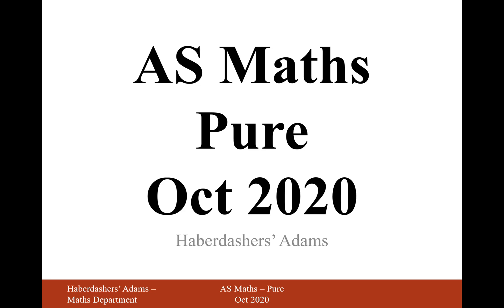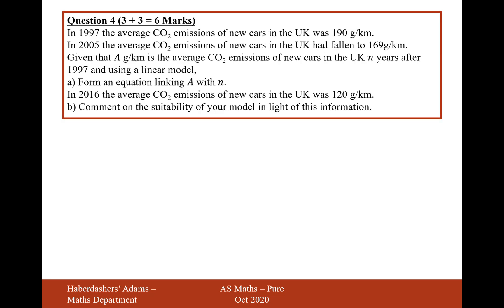Hello there, welcome to the October 2020 paper. Here we're looking at question 4. In 1997, the average CO2 emissions of new cars in the UK was 190 grams per kilometre. In 2005, the average CO2 emissions had fallen to 169 grams per kilometre. Given that a, in grams per kilometre, is the average CO2 emissions of new cars n years after 1997, use a linear model to form an equation linking a and n.